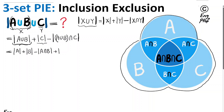For the last term — cardinality of (A union B) intersect C — we first distribute intersect C over the union of A and B using the distributive property. Distributing intersect C over A union B gives us: A intersect C, union, B intersect C.